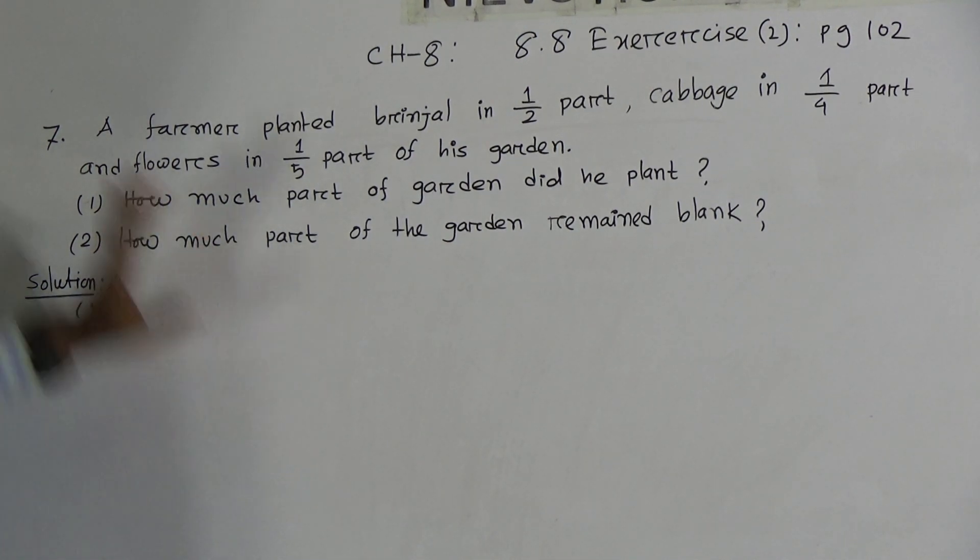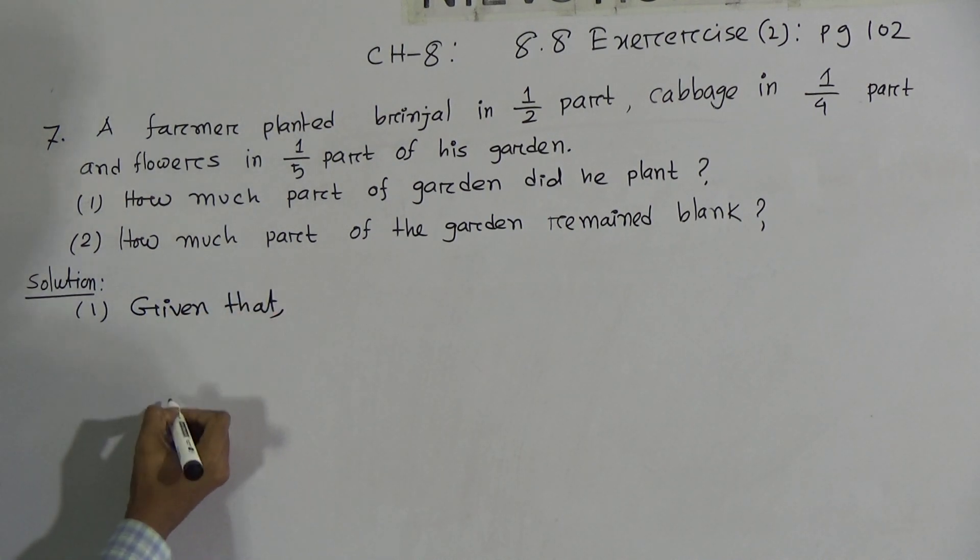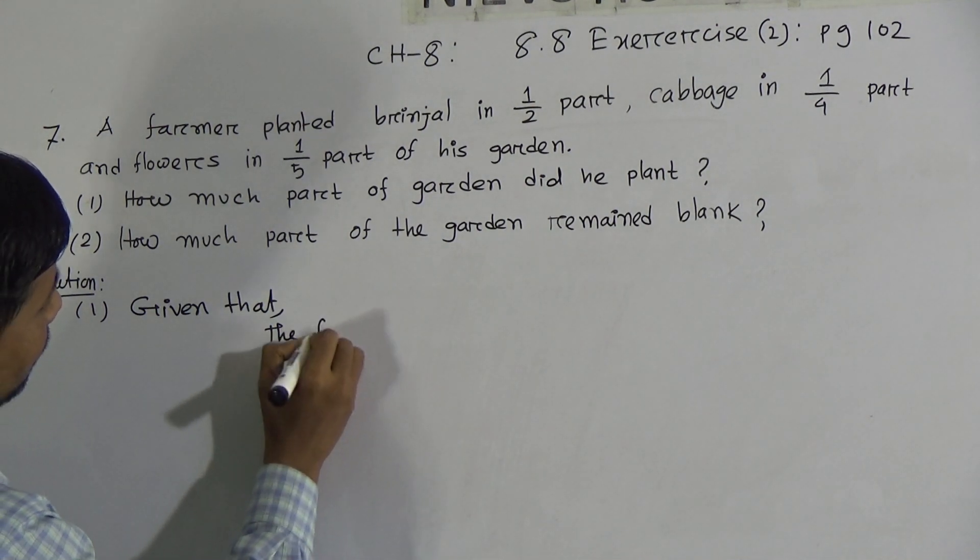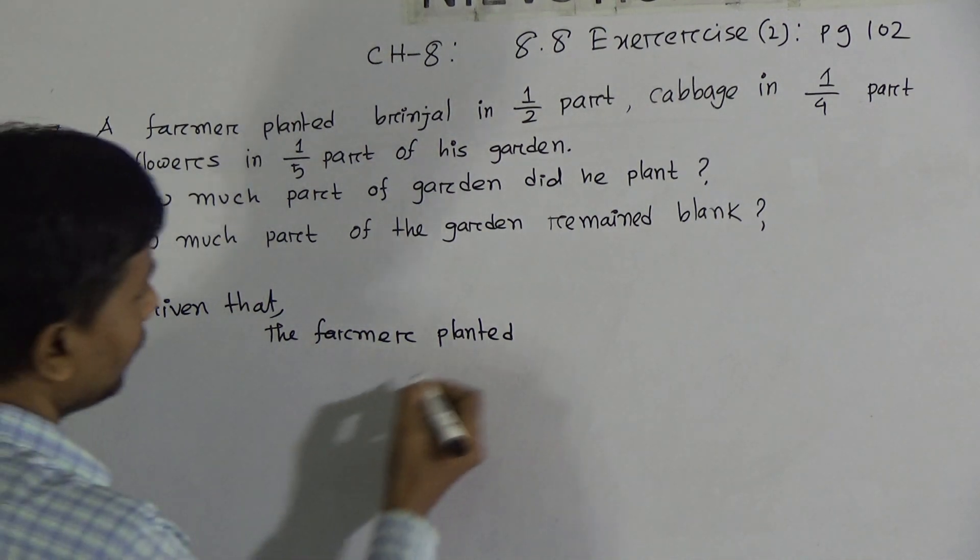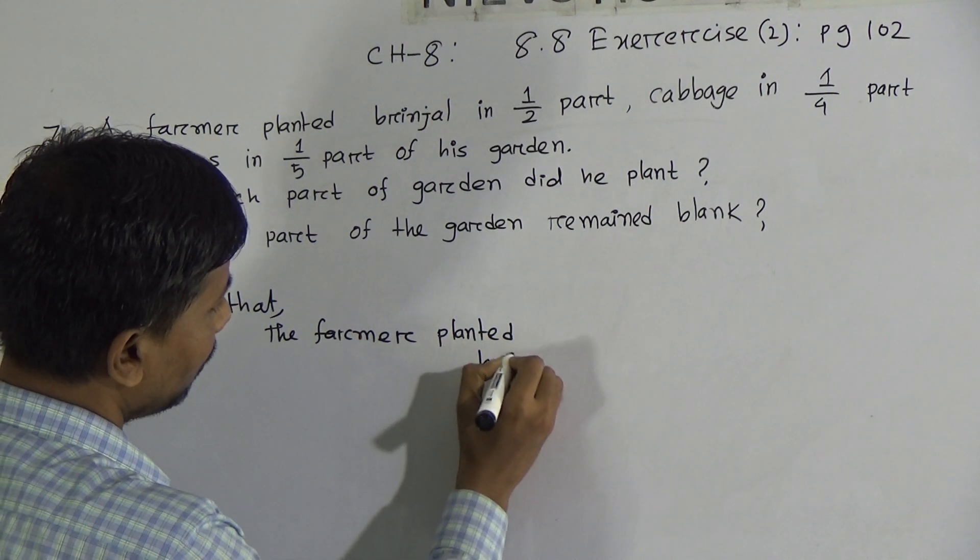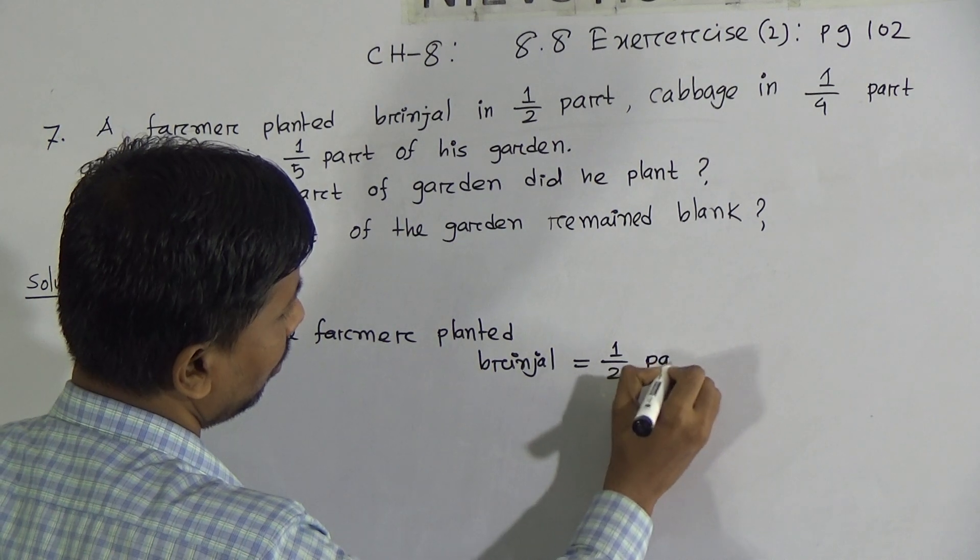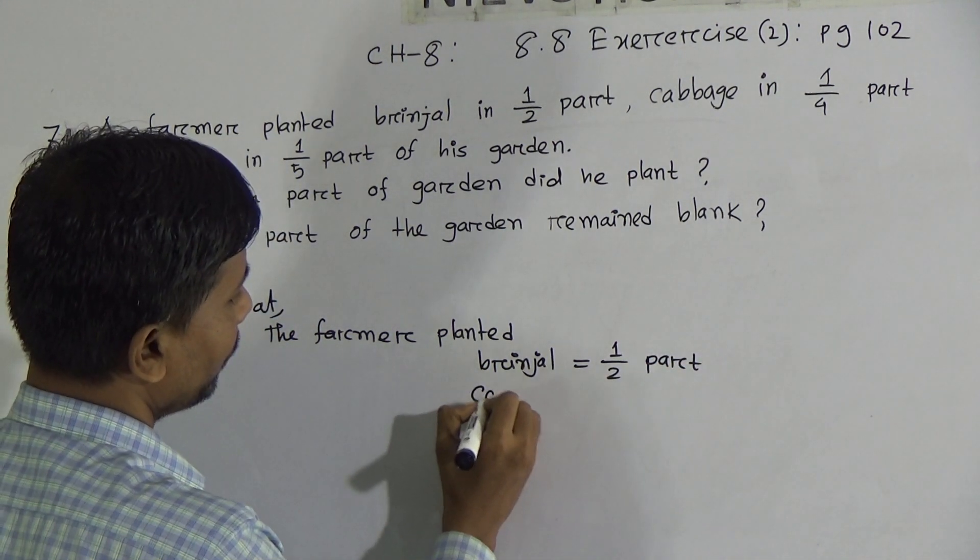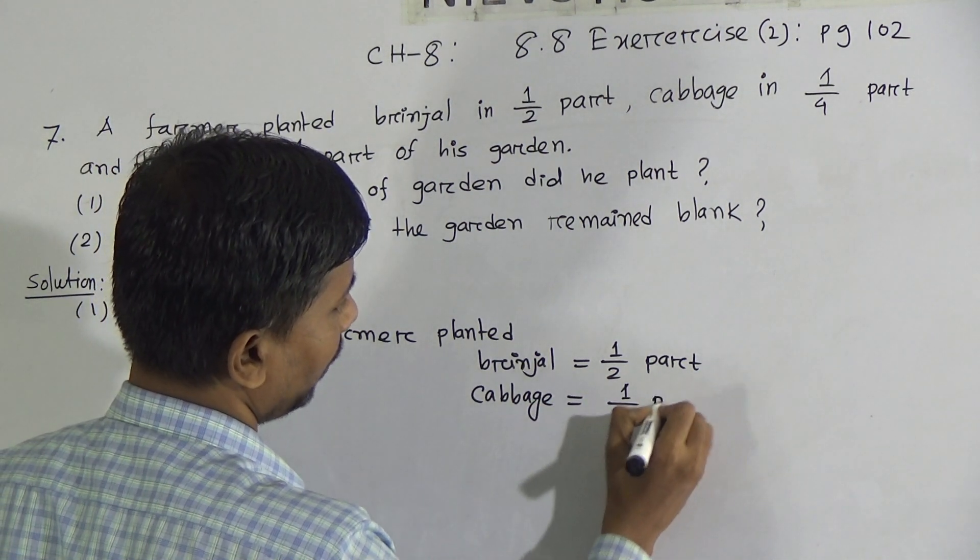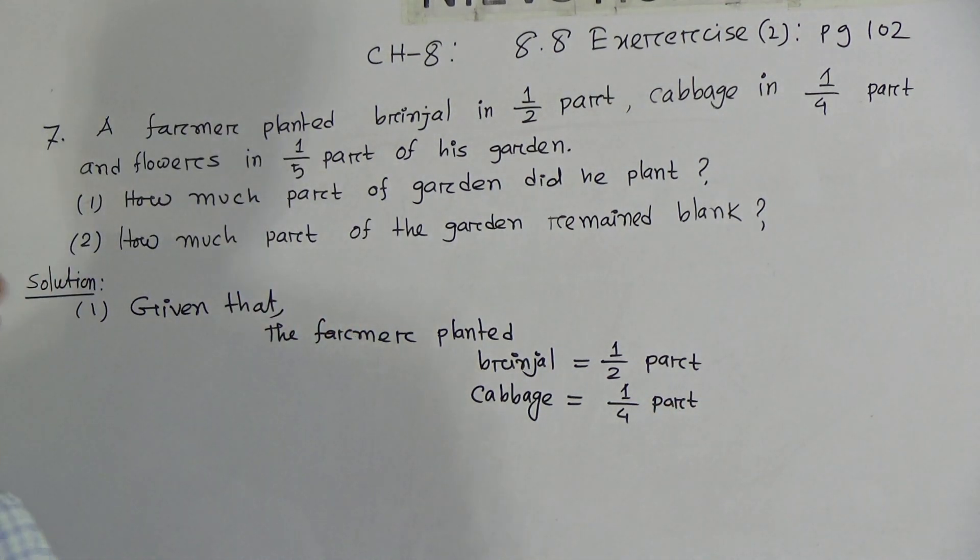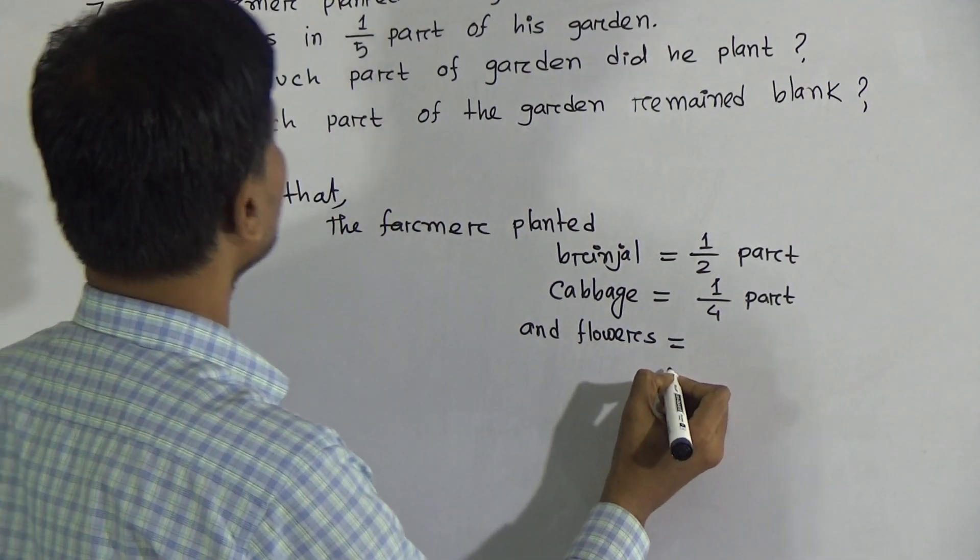The information is given that brinjal half part, cabbage in 1/4 part, and flowers in 1/5 part. At first you have to write this. Write given that: the farmer planted brinjal 1/2 part, cabbage 1/4 part, and flowers 1/5 part.